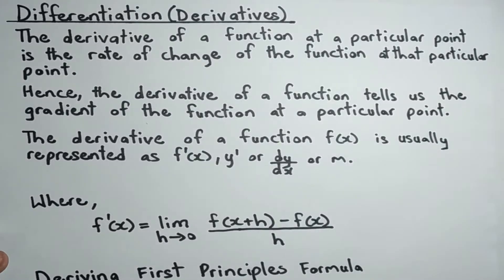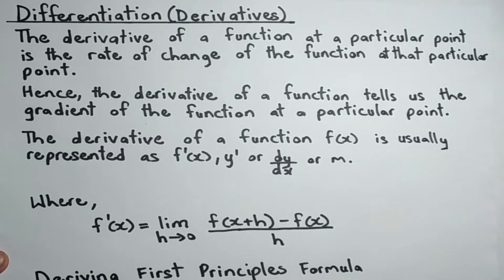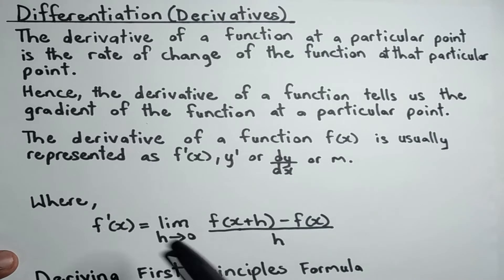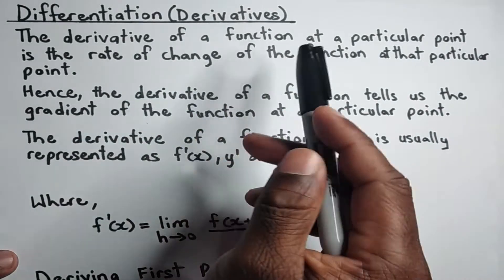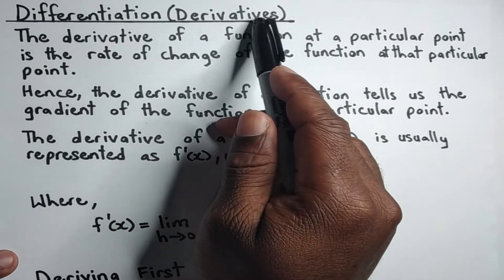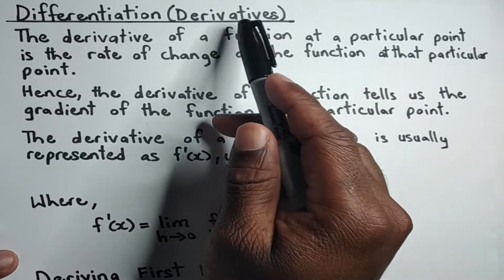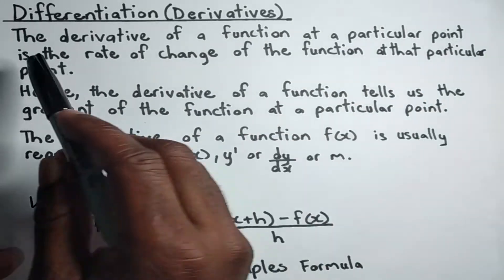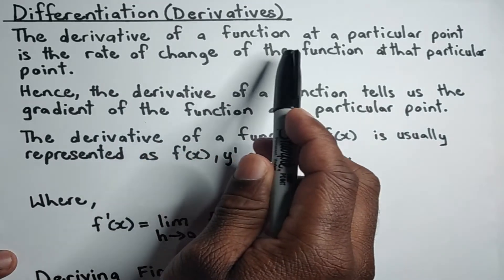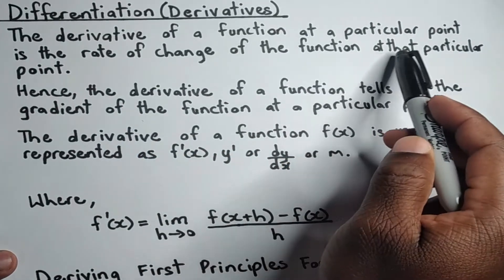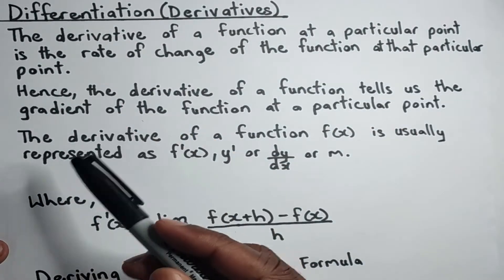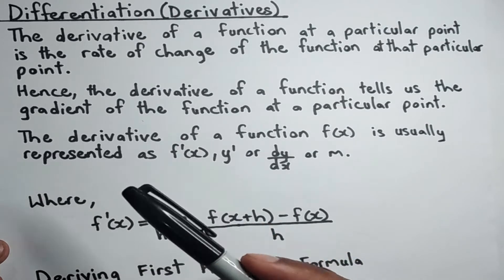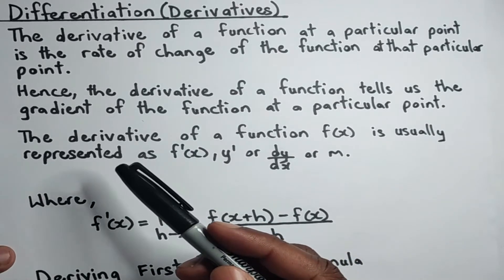We want to look at the first principles formula, but before we get into that, let's first get an understanding of differentiation. The derivative — differentiation is also referred to as derivatives — so the derivative of a function at a particular point is the rate of change of the function at that particular point. When we talk about differentiation, we're pretty much dealing with rate of change.